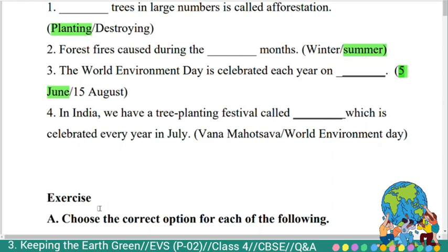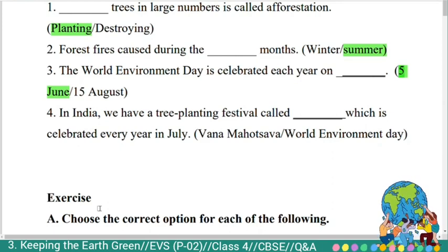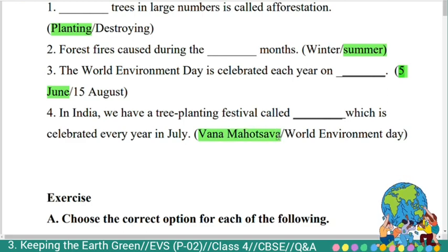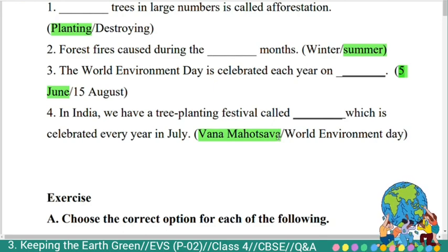Fourth question: 'In India, we have a tree planting festival called blank, which is celebrated every year in July — Vanna Mohotsava or World Environment Day?' The answer is Vanna Mohotsava. In India, we have a tree planting festival called Vanna Mohotsava which is celebrated every year in July.